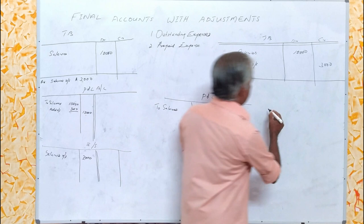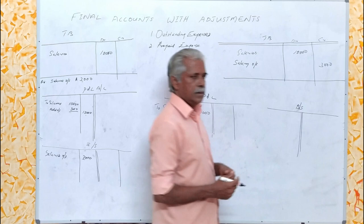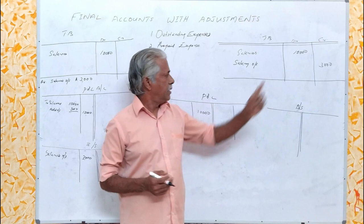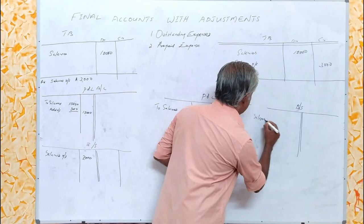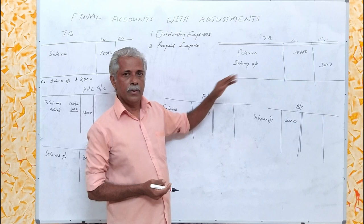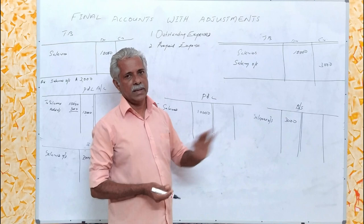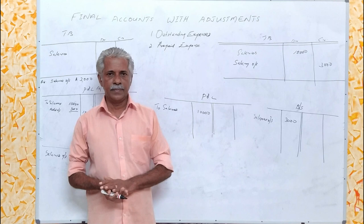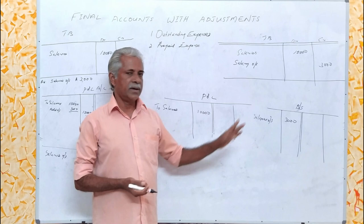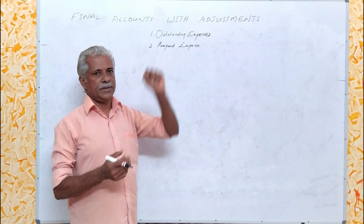For the balance sheet, salary outstanding is payable and therefore always represents a liability. Hence it will appear on the liability side of the balance sheet as salaries outstanding rupees 3,000. Since this is given in the trial balance as a recorded event, no further treatment is required — it can be directly taken on the liability side. To conclude: whenever the outstanding expense is given in the trial balance, that item needs to be taken only at one place, that is on the liability side of the balance sheet.